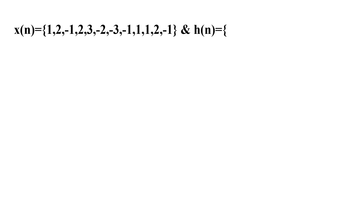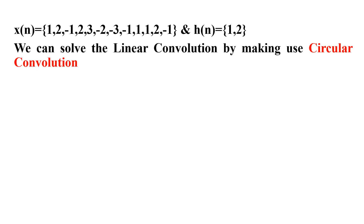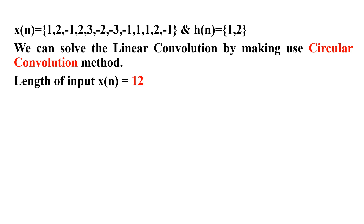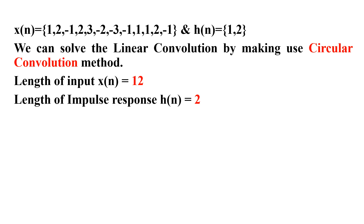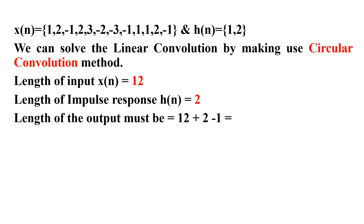First, let me write down x(n) and h(n) very carefully. I will solve linear convolution using the circular convolution method, since the graphical method is quite time consuming. I will first find the length of the input sequence x(n) — there are 12 samples in x(n). Similarly, the length of the impulse response h(n) is 2 elements. The length of the output sequence y(n) is 12 + 2 - 1 = 13.